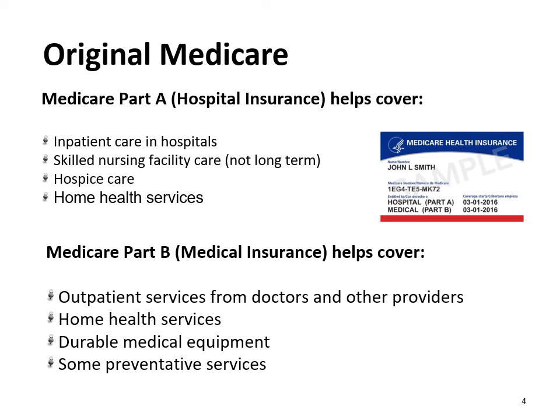Original Medicare assigns letters to its types of health coverage. Part A is hospital coverage, such as inpatient services and skilled nursing facilities. Part B is medical coverage, such as doctor, lab, outpatient services, and durable medical equipment. Part C is Medicare Advantage health plans from private insurance companies covering Part A and Part B benefits — many also include Part D. Part D is the prescription drug benefit, also through private insurers but regulated by Medicare.